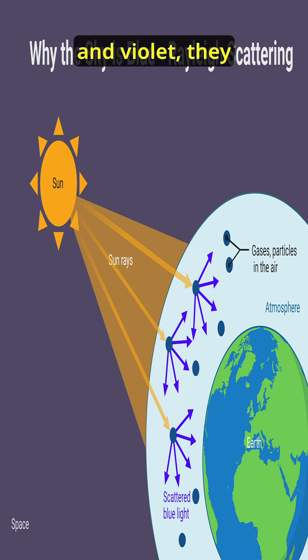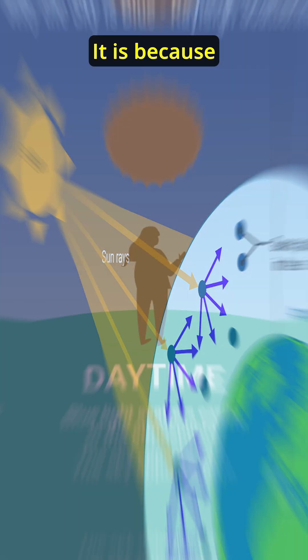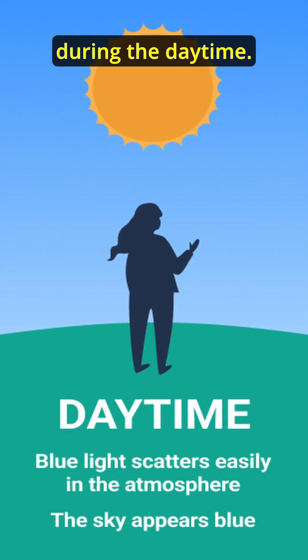Shorter wavelengths, blue and violet, they scatter more. It is because of this our sky looks blue during the daytime.